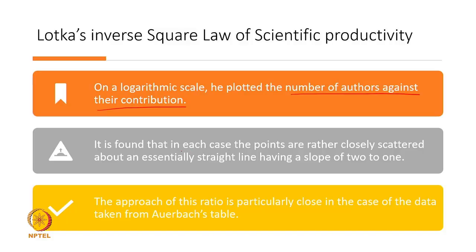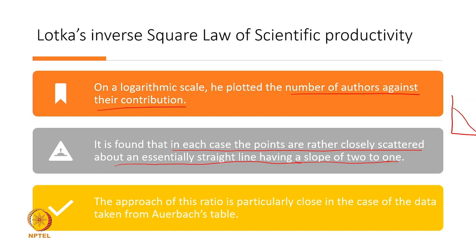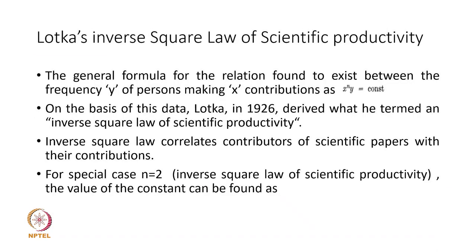Having counted authors and contributions using Chemical Abstracts and Auerbach physics, Lotka plotted the number of authors against their contributions. He found that in each case the points are rather closely scattered about an essentially straight line having a slope of 2 to 1. The approach of this ratio is particularly close in the case of data taken from the Auerbach table, which is quite close to the straight line compared to Chemical Abstracts data.